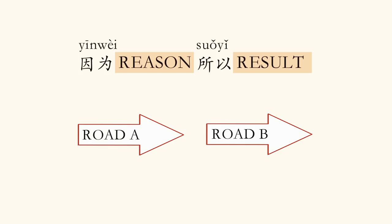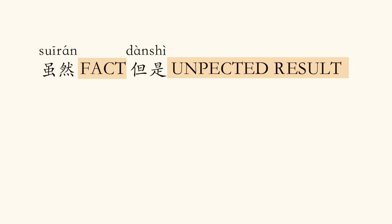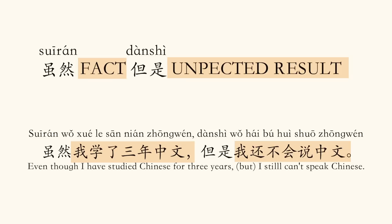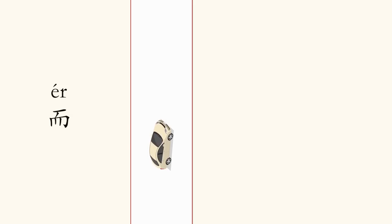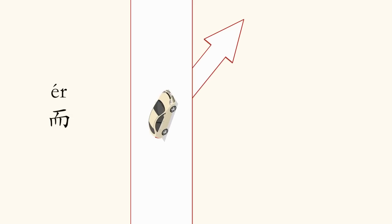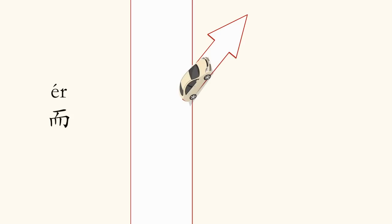虽然/但是 means: even though the fact, but an unexpected result. 虽然我学了三年中文，但是我还不会说中文。It's like you take a U-turn and go in a completely different direction from where you were expected to go — the second road turns 180 degrees. Now let's take a look at the feeling or inner logic of 而. 而 is like you're driving on the main road and you see a second road, so you take a maybe 30-degree turn and get onto the second road. Not zero degrees nor 180 degrees.